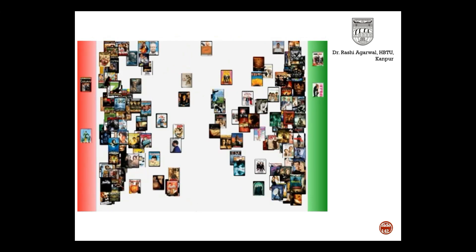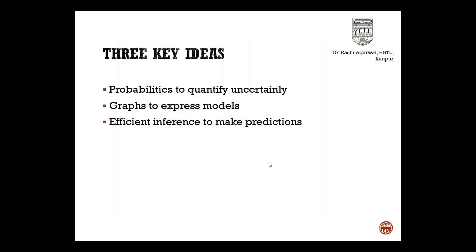So this is what a probabilistic model is. There are three key ideas behind these models. First, probability to quantify uncertainty — we assume we can quantify any uncertainty by a probability. If an event is not probable, the probability is 0. If you are definite about an event happening, it is 1. And all probabilities lie between 0 and 1.